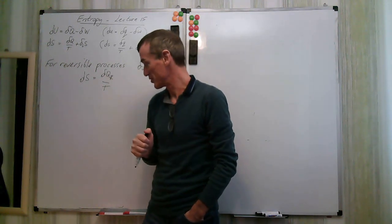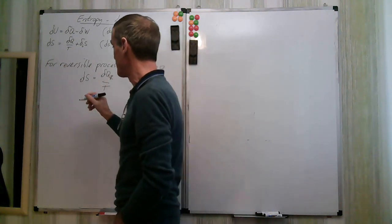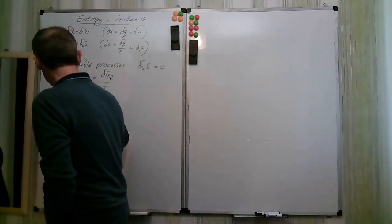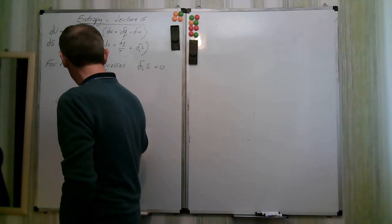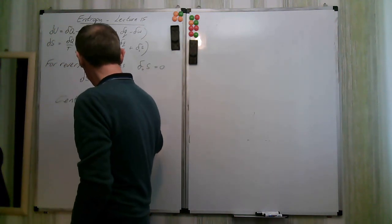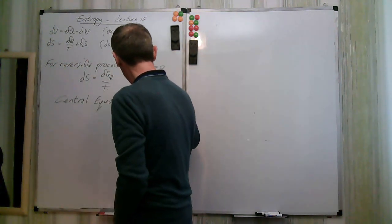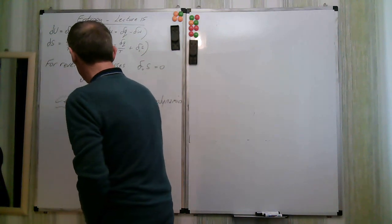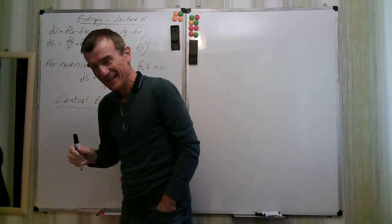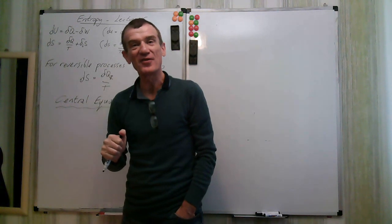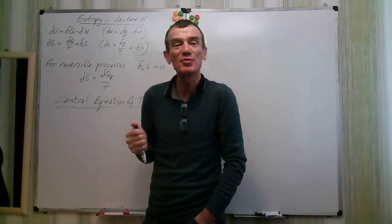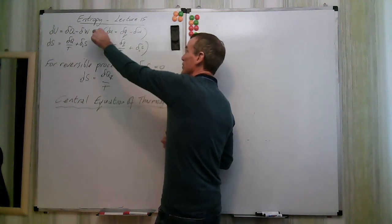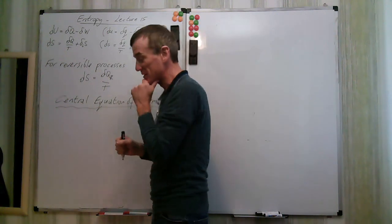It turns out you don't have to do this. Because entropy is a property, and with our two-property rule, we know it must be related to the other properties. This is the aspect I want to talk about today. We're going to talk about the central equation of thermodynamics, and what it's about is trying to connect entropy to the other properties. We're going to look at per unit mass — specific terms — which is more convenient.